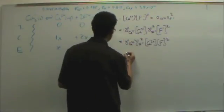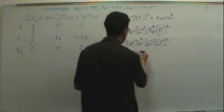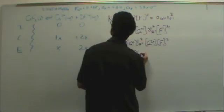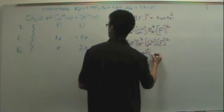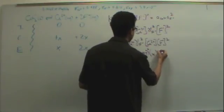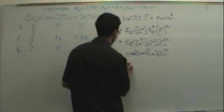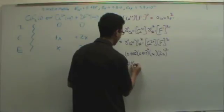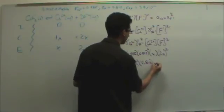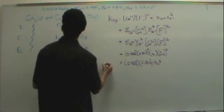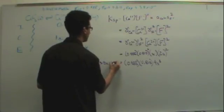So now you just plug in. So gamma of calcium, that's given 0.485. It's going to be a unitless number that's going to be between 0 and 1. Gamma of fluorine is 0.810 squared. Calcium, that's x, and fluorine from the ICE table is 2x squared. So you're going to have the 0.485, the 0.810 times 4x cubed. And this is 3.9 times 10 to the minus 11.